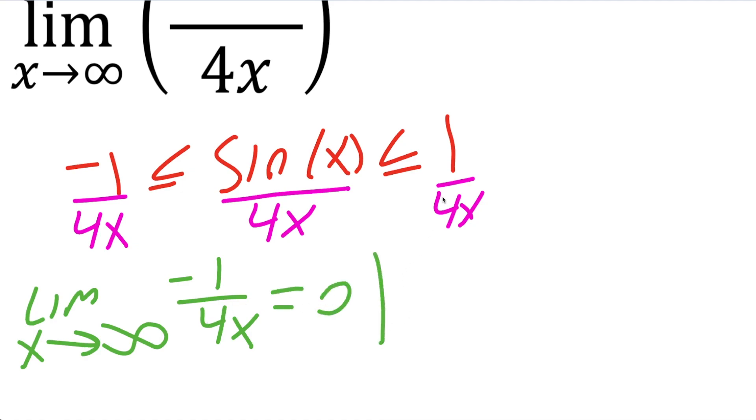Now we have to try this form too, limit as x approaches infinity for one divided by four x. Again, if I put infinity here, I get one divided by infinity, which is zero.